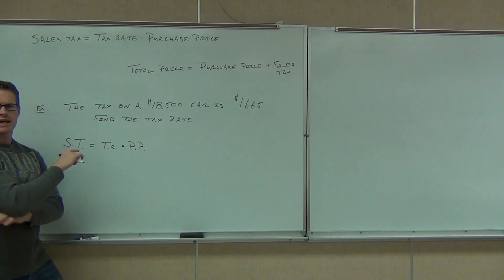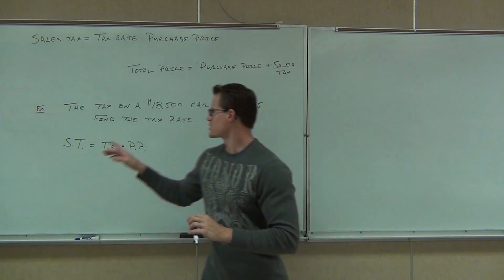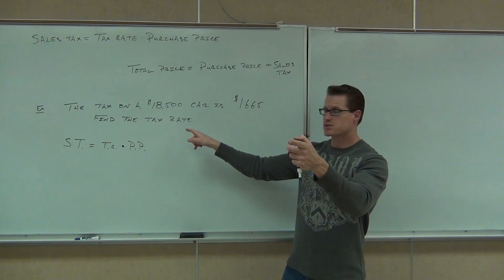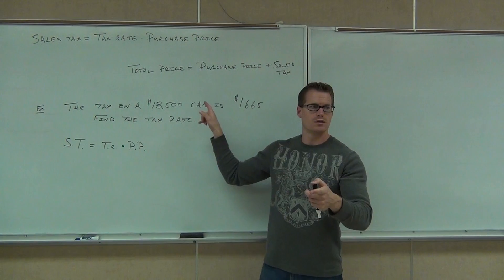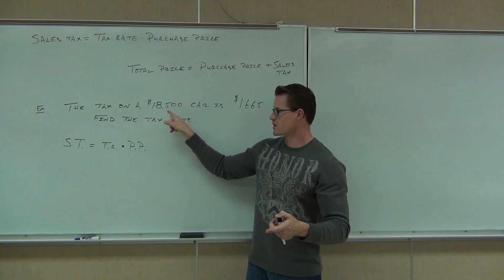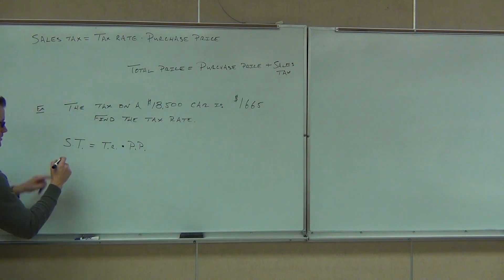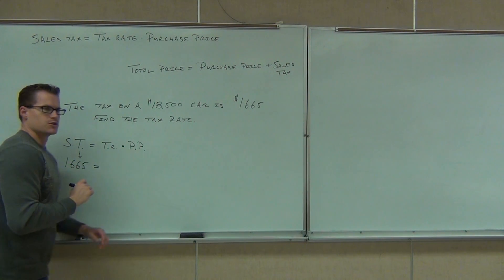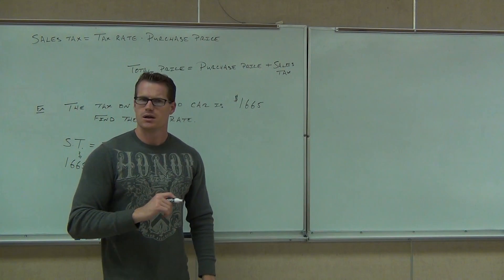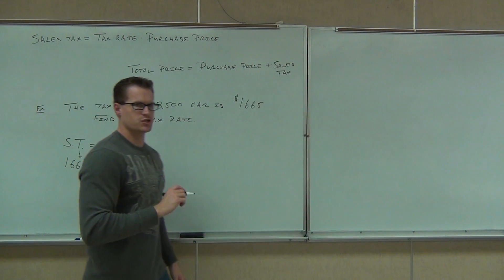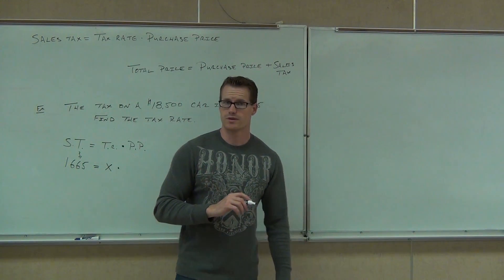Sales tax equals tax rate times the purchase price. Do you know how much the sales tax was? It's $1,665. Very good. What is the purchase price? $18,500. We're trying to find the tax rate. So could we plug in some of these numbers? Instead of sales tax, I know that was $1,665. Do I know the tax rate? Let's call that X. Do I know the purchase price? Sure, that's $18,500.